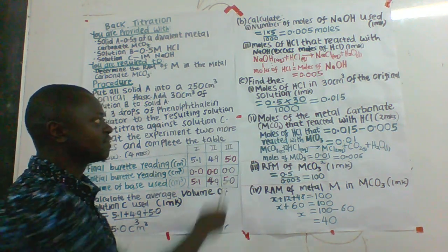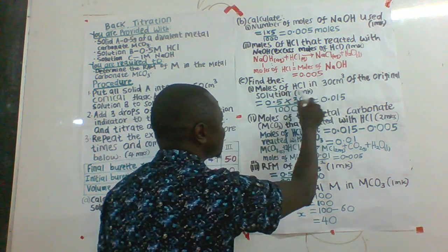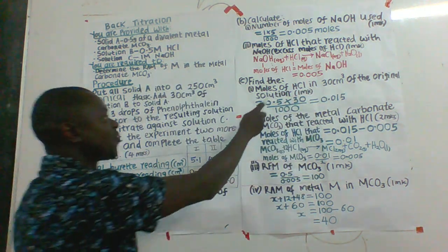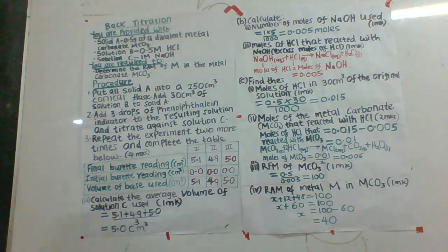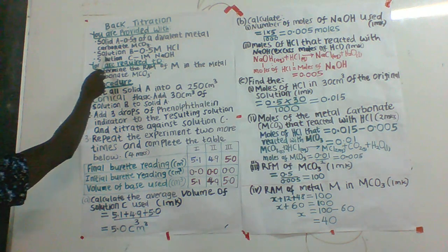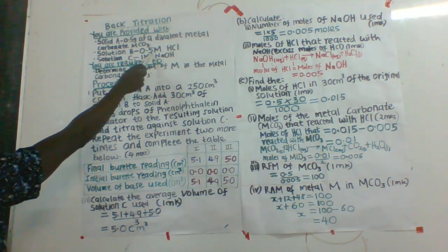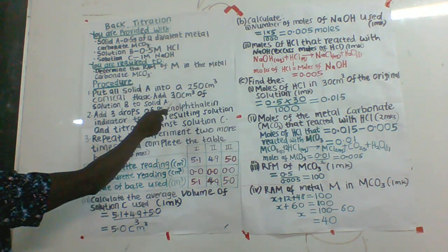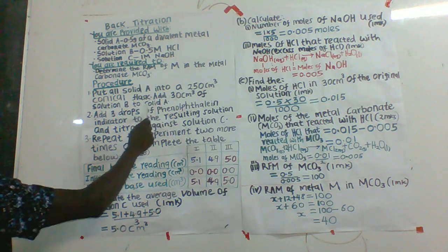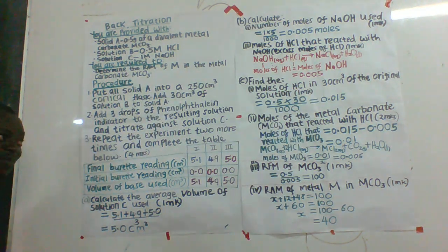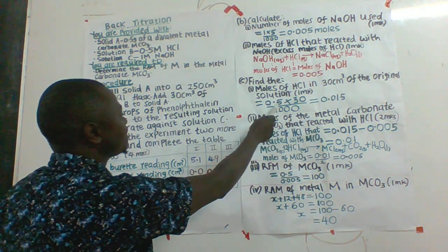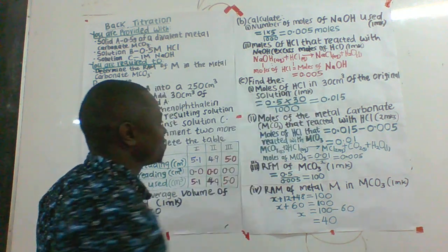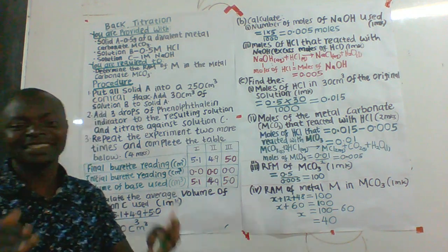In part C, we find the moles of hydrochloric acid in 30 cm³ of the original solution B, which is the original hydrochloric acid. Tracing back to the data given, solution B was 0.5 molar and the volume used was 30 cm³. Therefore the total moles of HCl = 0.5 × 30 ÷ 1000 = 0.015 moles. These are the total moles of hydrochloric acid before it reacted with anything.